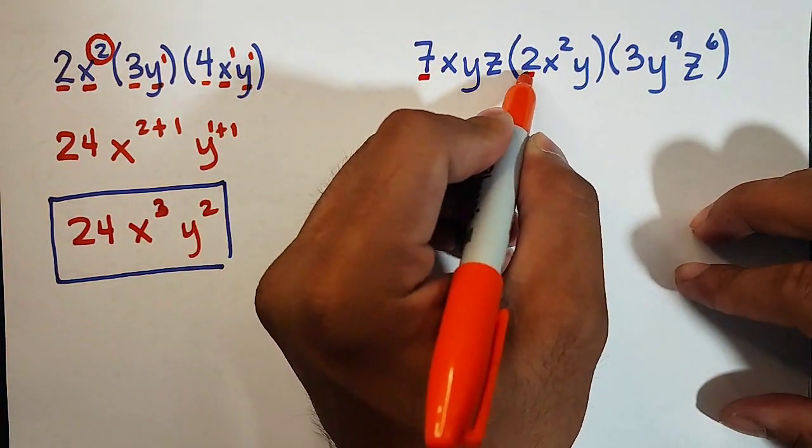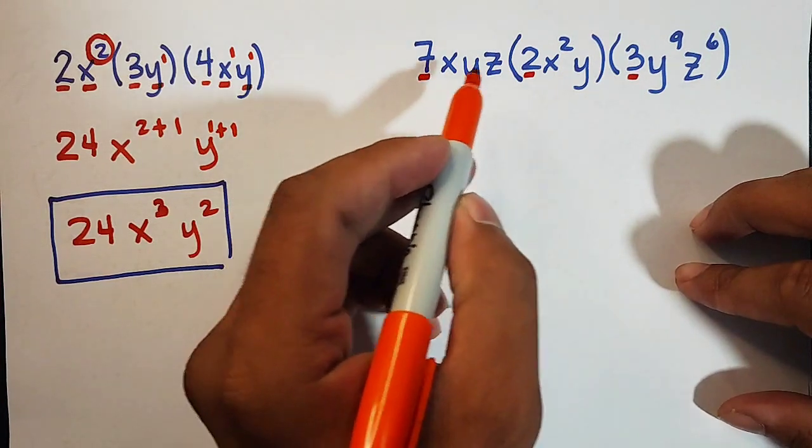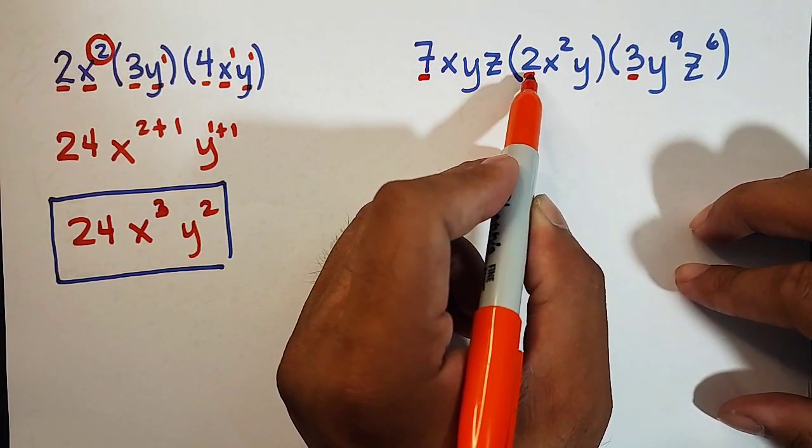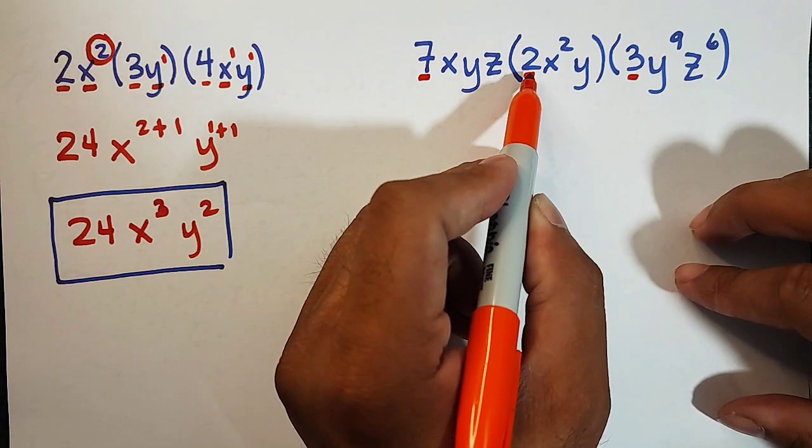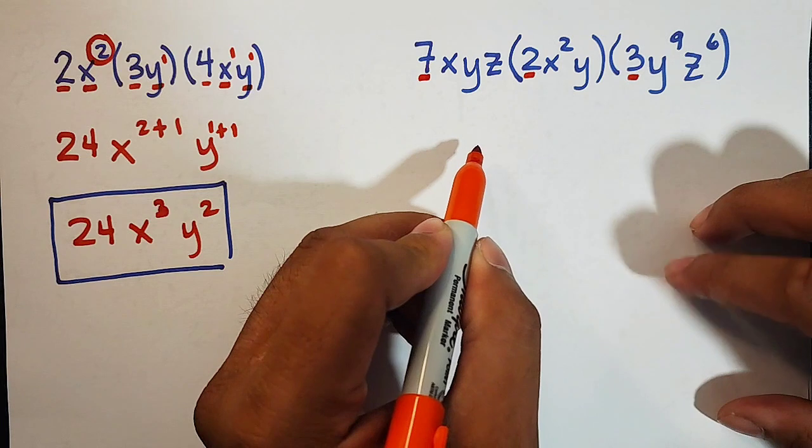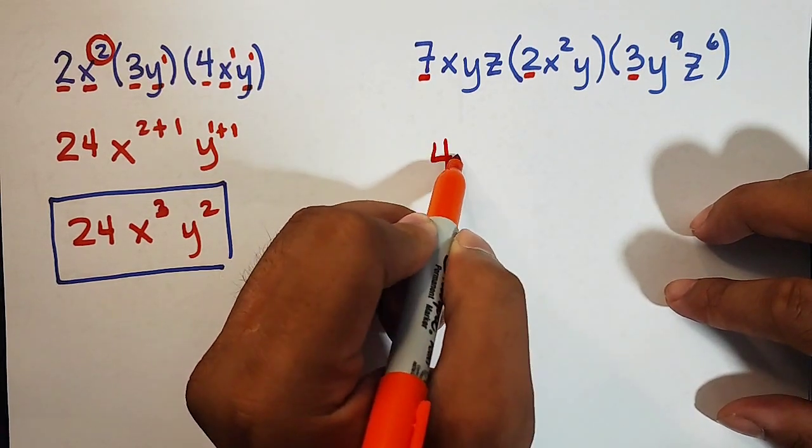We will multiply 7, 2, and 3. 7 times 2 is 14. Okay? Times 3, the answer is what? 42.